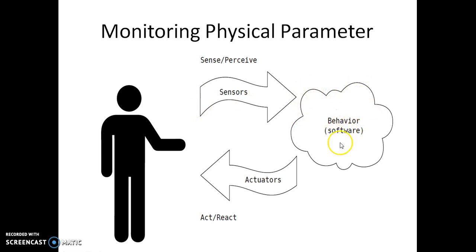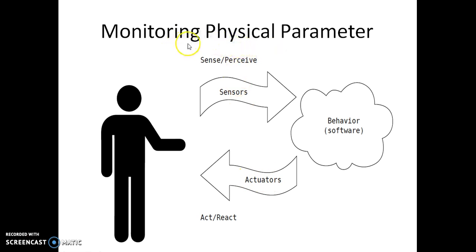This software is running on a hardware circuit. This hardware actually gives the output waveform in the form of an electrical signal. But we need to control the physical parameters, so these electrical signals have to be converted into physical parameters using actuators. In this way we can monitor physical parameters using sensors to sense the parameter, do appropriate behavior changes, and monitor through actuators.